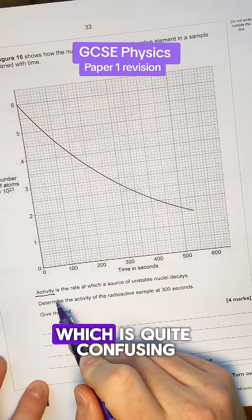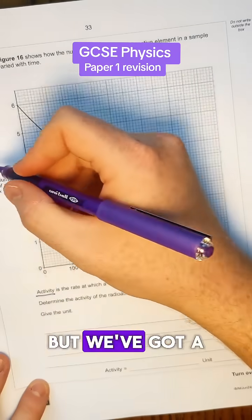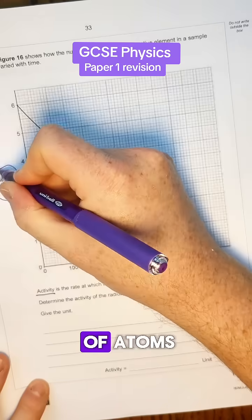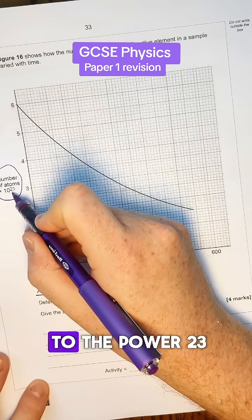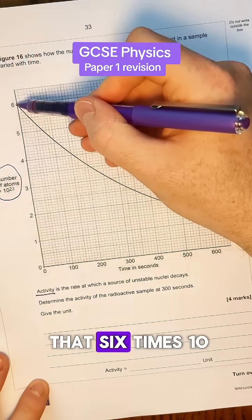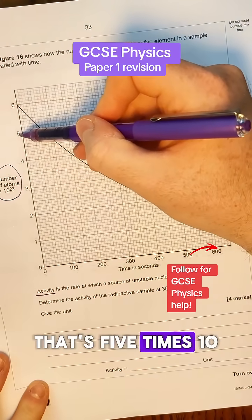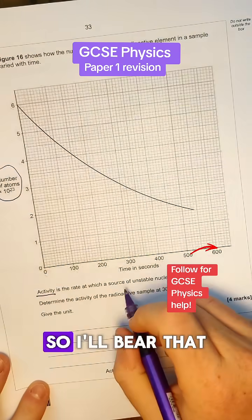It's about something called activity which is quite confusing at the best of times but we've got a really confusing graph here where we've got number of atoms and that's times 10 to the power 23. What that means is that's six times 10 to the power 23, that's five times 10 to the power 23 and so on. So bear that in mind for later.